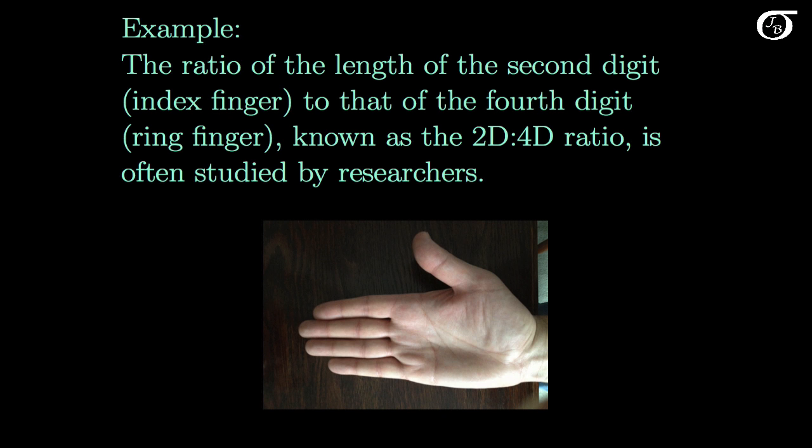Let's look at an example. The ratio of the length of the second digit, the index finger, to that of the fourth digit, the ring finger, known as the 2D to 4D ratio, is often studied by researchers. Here's a picture of my right hand, and this is my second digit here, so it's this length to this fourth digit length. That's the 2D to 4D ratio. Researchers have sometimes tried to link this ratio to characteristics of the person, such as physical aggression.